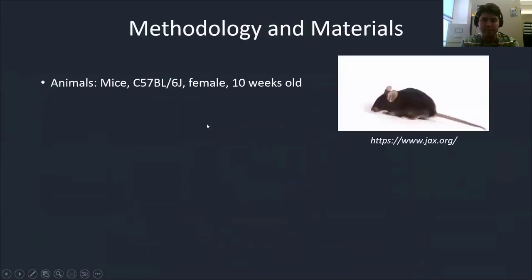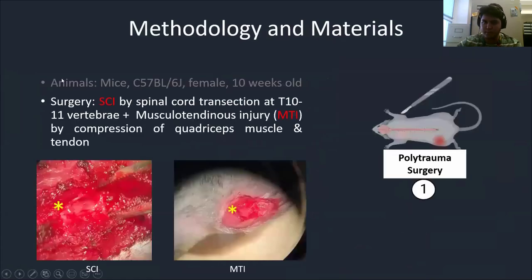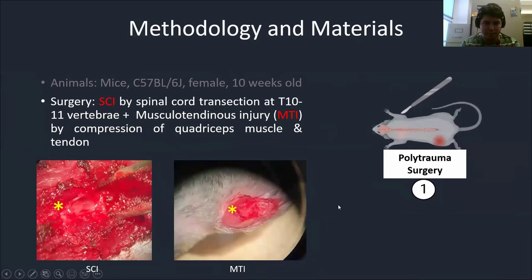We performed our experiments on black wild-type female 10-week-old mice. Our surgeries involved induction of an SCI through spinal cord transection at T10 and T11 vertebra, followed by a musculotendinous injury through compression of the quadriceps musculotendinous tissue. Following surgery, we provided postoperative care to manually express the bladders, which are blocked following spinal cord injury, and provided soft food and daily rehydration through sub-Q saline injections.